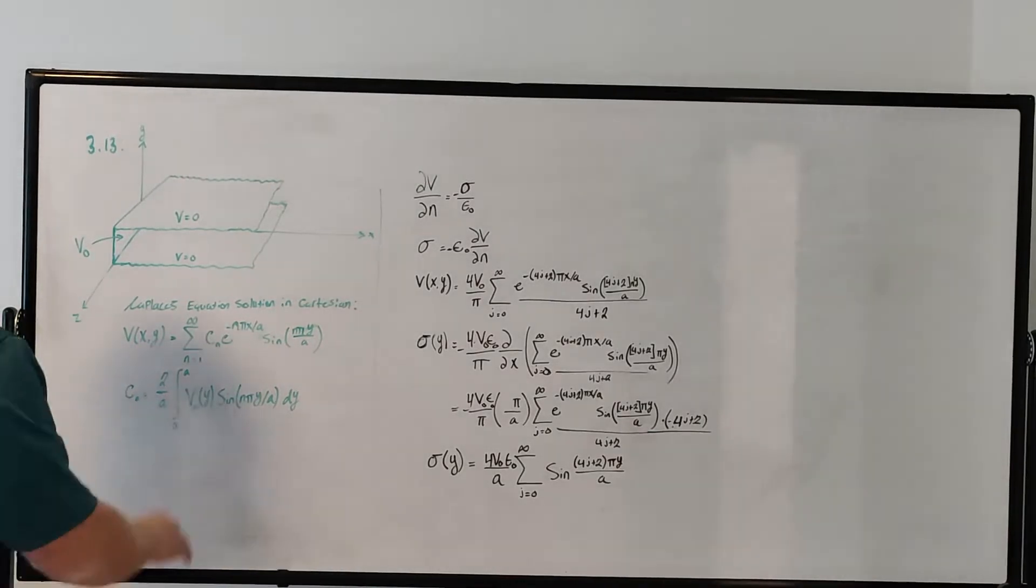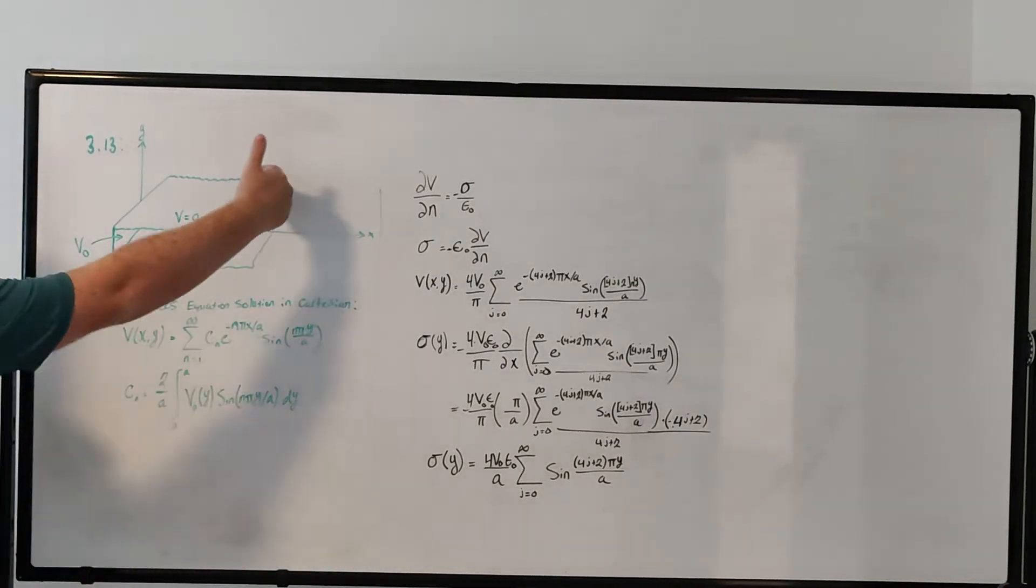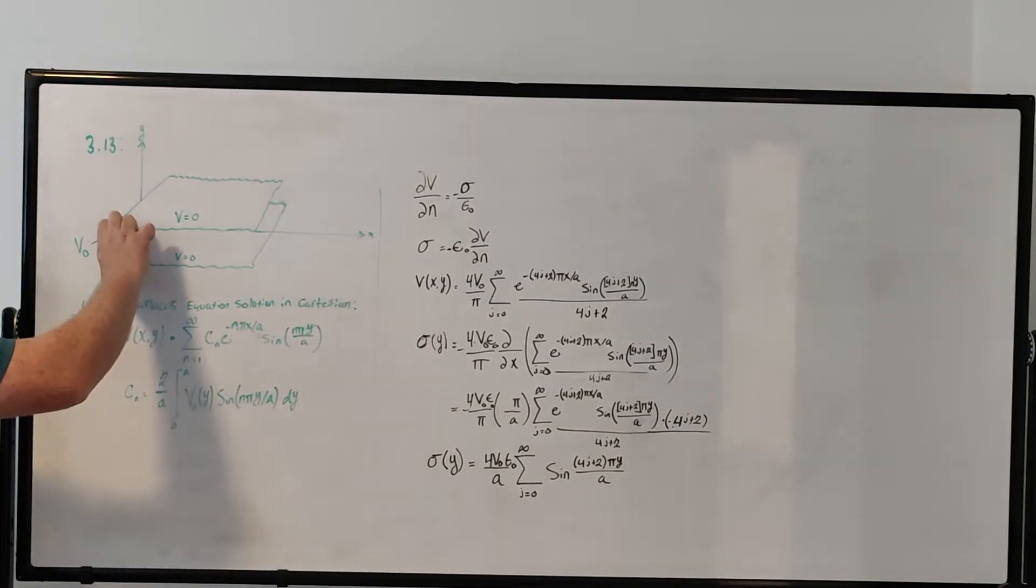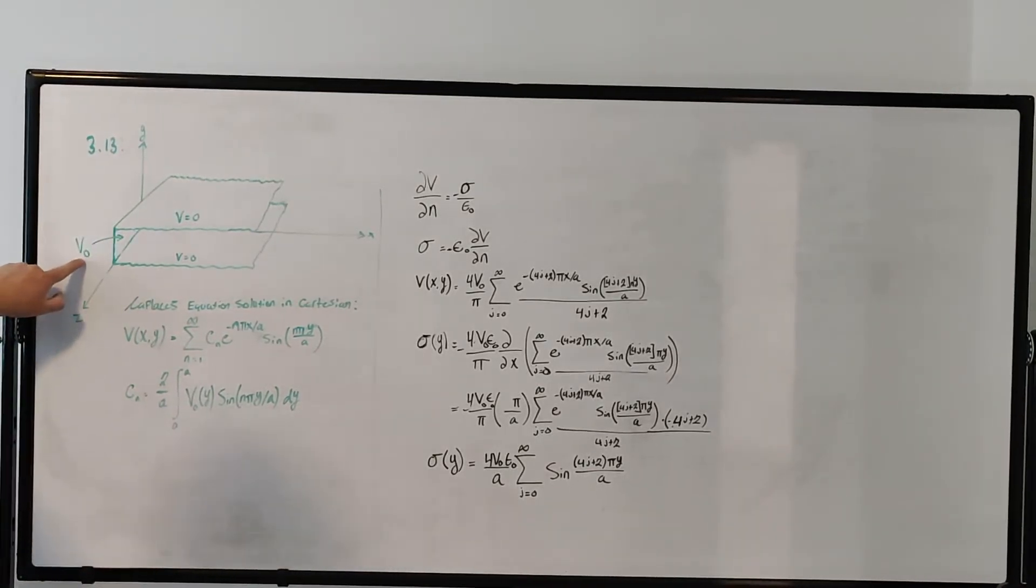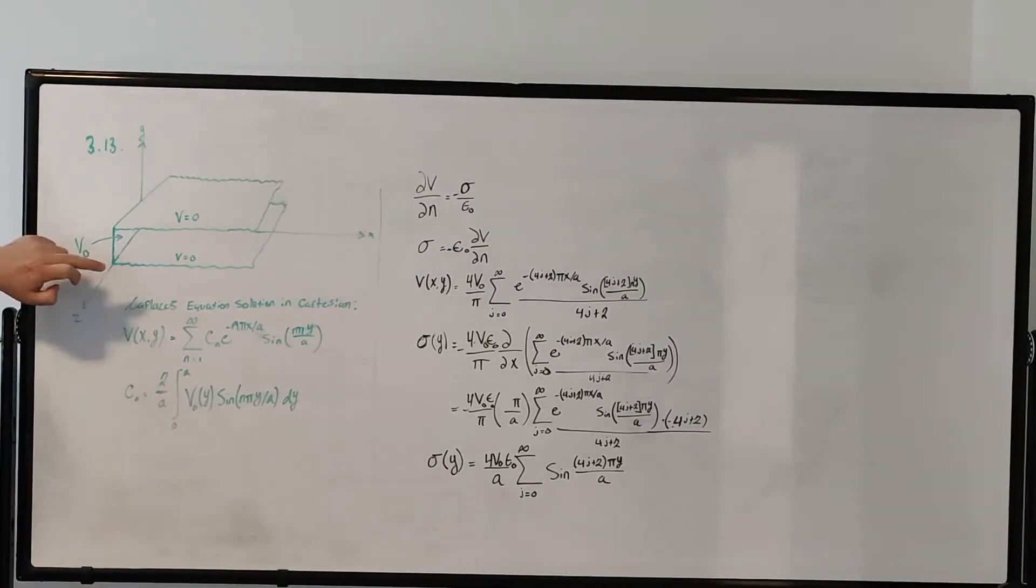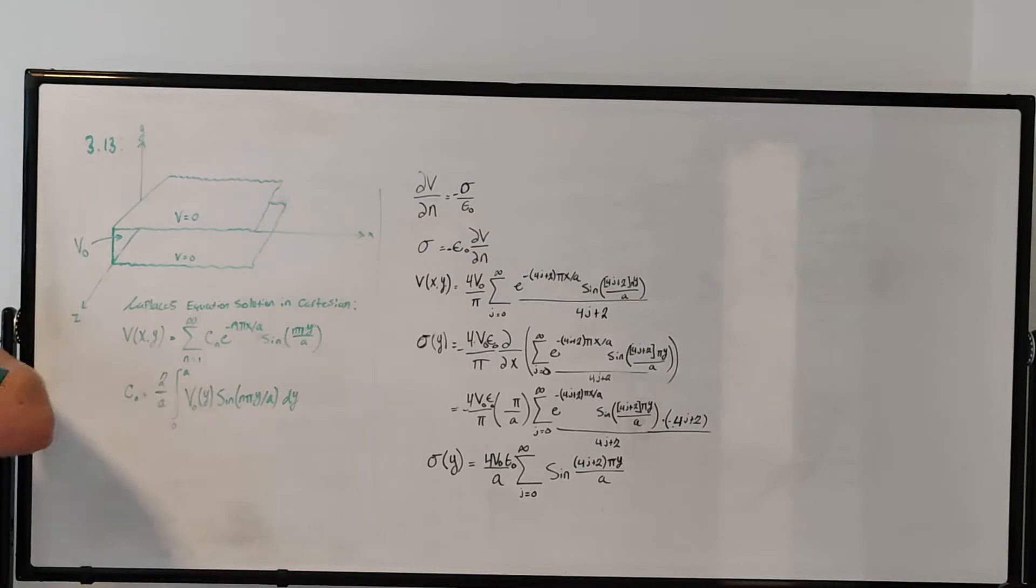As we see here we have our two metal strips, infinite metal strips, and then we have our metal plate, a conducting plate that connects the two, and it's at constant potential V0, and it sits at x equals zero. This is the x-axis, y, and z coming out of the board.